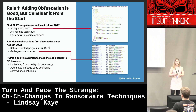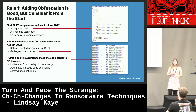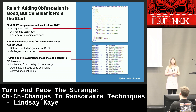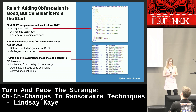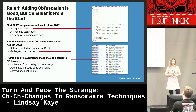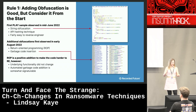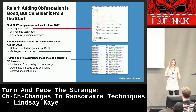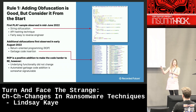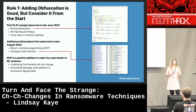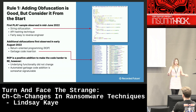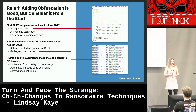If you're a threat actor, adding obfuscation is great, but definitely consider doing it from the start. The first Play sample from mid-June 2022 had string obfuscation — you can see an example on the top right — not wildly challenging but that's the algorithm they used. They also had an API hashing technique making static reverse engineering a bit more challenging. But ultimately, outside of these two things, it was pretty easy to reverse engineer.